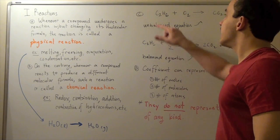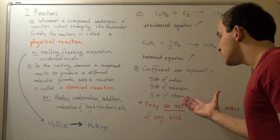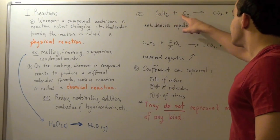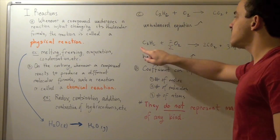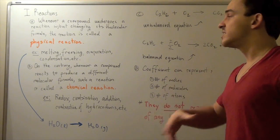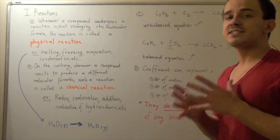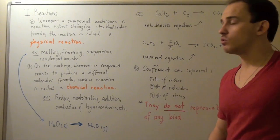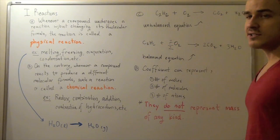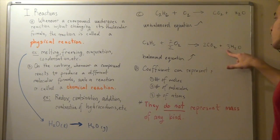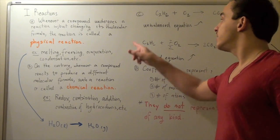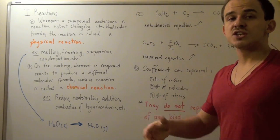Notice that what these coefficients represent is moles, molecules, or atoms — but what they can never represent is mass. So these coefficients — in this case one, seven over two, two, and three — will never represent mass. Never kilograms, never grams, never pounds, never any type of mass. Only moles, atoms, or molecules. In other words, one mole of this hydrocarbon reacts with seven over two moles of diatomic oxygen to produce two moles of carbon dioxide and three moles of water. We can never say one gram reacts with seven over two grams. These coefficients represent moles, molecules, or atoms — never any mass.